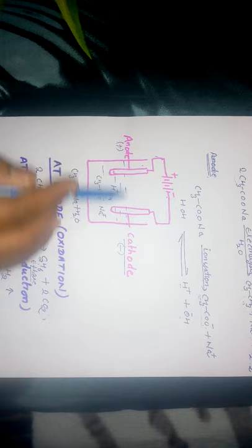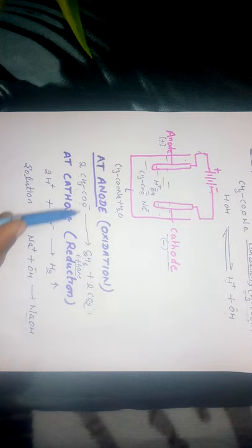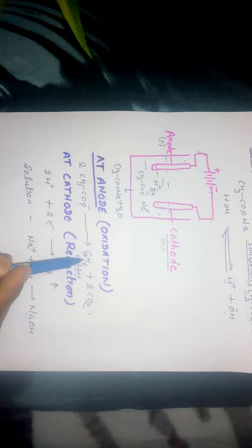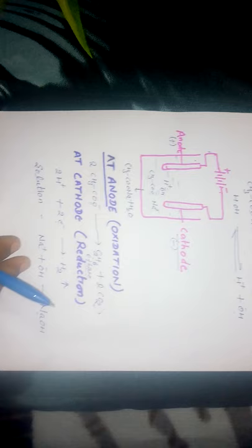Since the anode is connected to the positive terminal, the charge on the anode is positive. At the anode, oxidation takes place — oxidation means loss of electrons. The anionic species — acetate ion and hydroxide ion — move toward the anode. Since the acetate ion has a lower discharge potential, it undergoes oxidation: it loses an electron, giving ethane and CO2 gas is liberated.